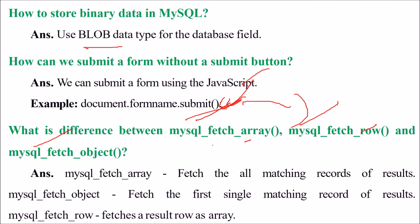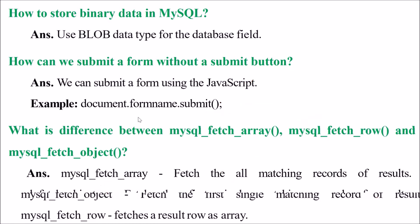mysql_fetch_array fetches all matching records of the result. mysql_fetch_object fetches the first single matching record of the results. mysql_fetch_row fetches a result row as an array.